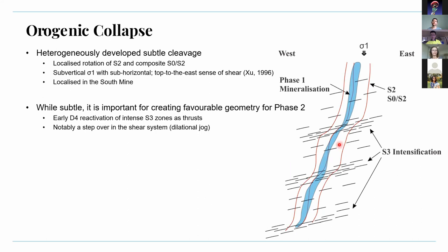These zones of S3 intensification have locally rotated S0 and S2 and were reactivated early during D4 to create low-angle thrusts and flexures observed in the shear zone. In addition, opposing shear directions along steep S0–S2 planes and moderate S3 created extensional sites — this creates an excellent fluid trap, hence the hybrid mineralization in the south mine.